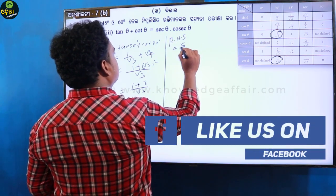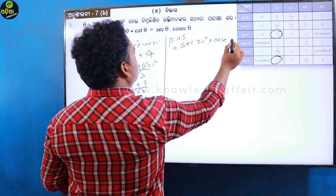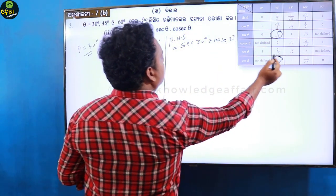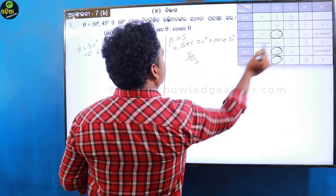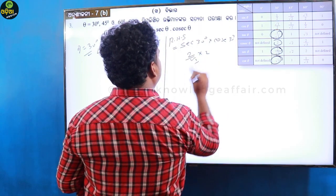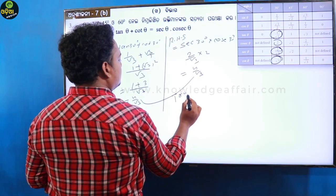RHS is sec 30 degrees into cosec 30 degrees. Sec 30 equals 2 by root 3, and cosec 30 equals 2. Two by root 3 into 2 equals 4 by root 3. This satisfies, LHS equals RHS verified.